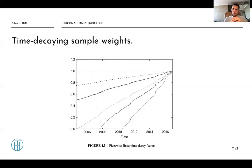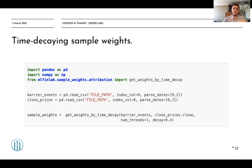Now let's look at time-decaying weights. We want to give higher weights to the most recent data, but we need to decide how to penalize older data — this is controlled by the decay parameter. As shown in this plot, these are the sample weights for our dataset based on various decay parameter values.